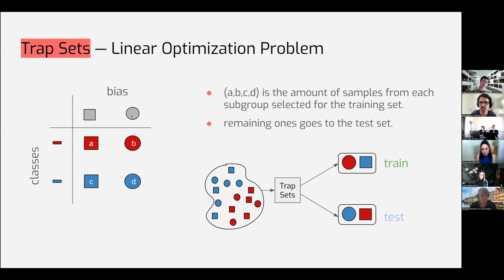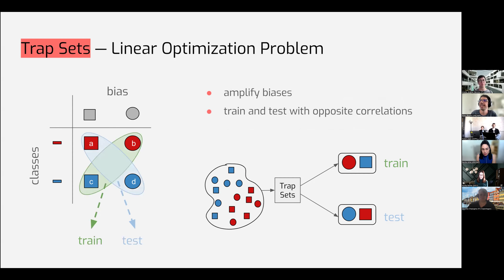We can divide our data, considering two classes and two biases, into four different subgroups. The output expected from trap sets is how many samples for each subgroup to allocate for training, with the remaining ones sent to test. Ideally we put, for example, subgroups A and D on test and B and C on training. We want both classes present in both training and test. If the model learned to classify based on squares - that squares are correlated to the red class - it will fail on test because now blue is associated with circles, not squares.